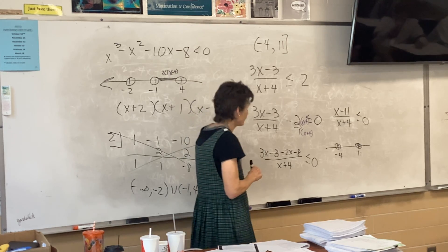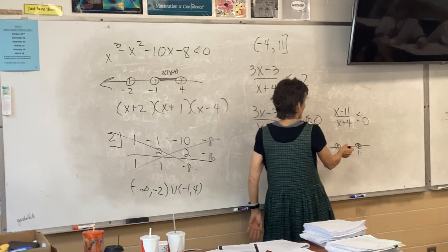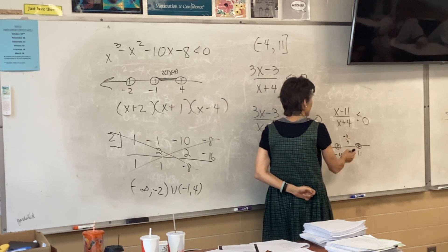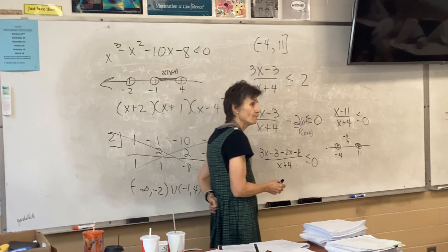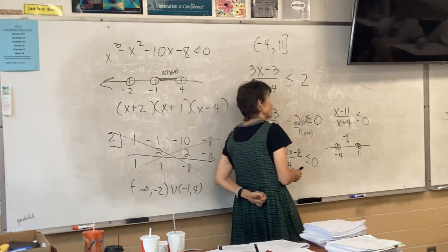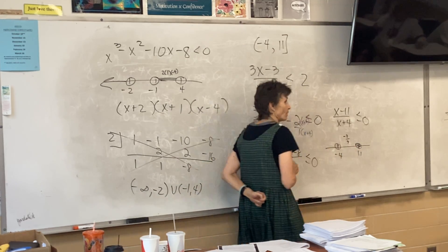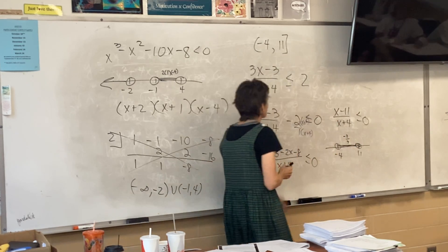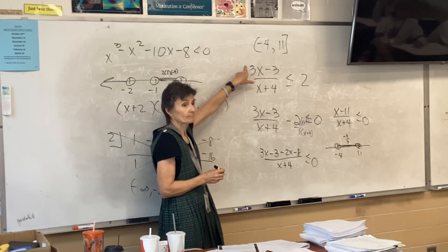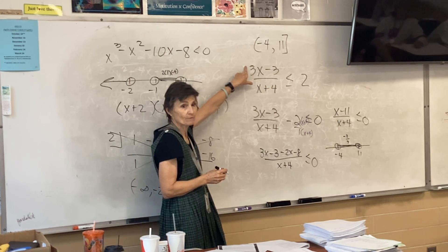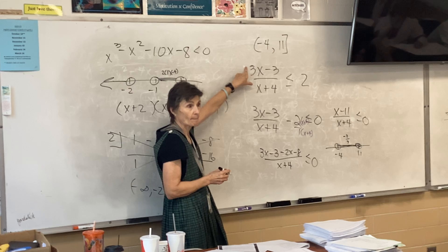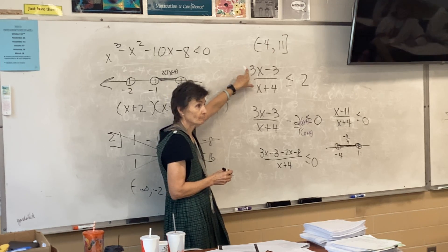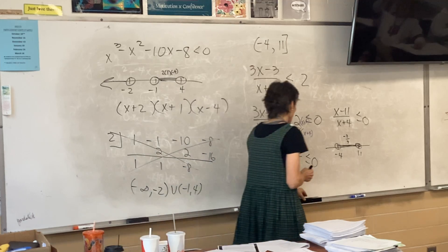So then what number did you pick? Zero. Of course you did because it's the best. So we pick zero and we get negative 11 fourths. Is negative 11 fourths less than zero? Yes it is. So we shade it and his answer is exactly right. So good job to those of you that got that right.